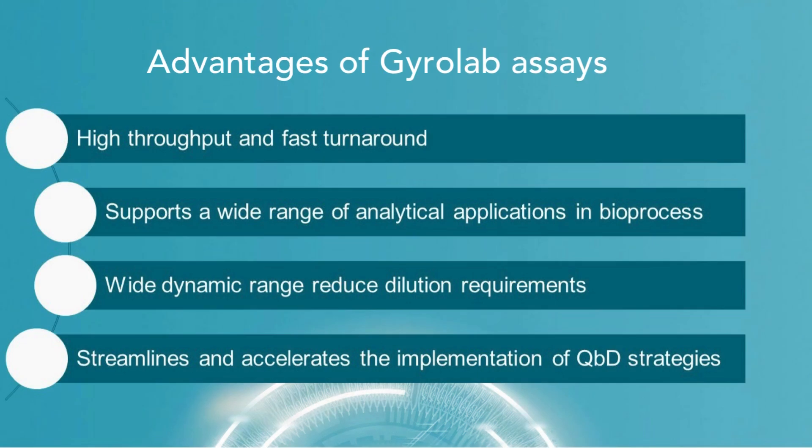The automated platform results in rapid generation of analytical data with high sample throughput and the flexibility to perform titer and impurity assays in the same experiment. The sensitivity of the platform often exceeds that of traditional ELISA methods, ensuring that even low abundance proteins can be detected and quantified with high precision.